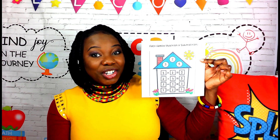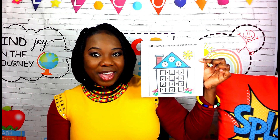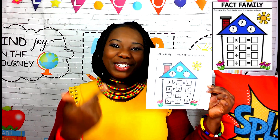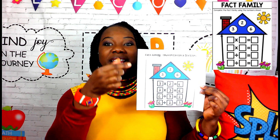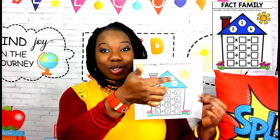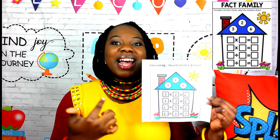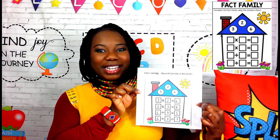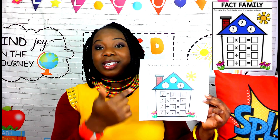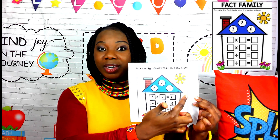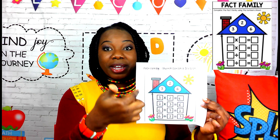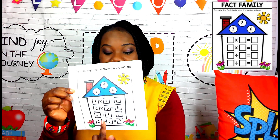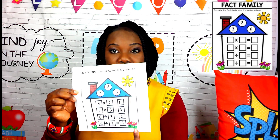Here is a multiplication fact family reinforcing the concept that the numbers 3, 2, and 6 are related in the multiplication table. If you multiply 3 times 2, you get 6. If you reverse it and multiply 2 by 3, you also get 6. Then, 6 divided by 3 is equal to 2, and 6 divided by 2 is equal to 3.